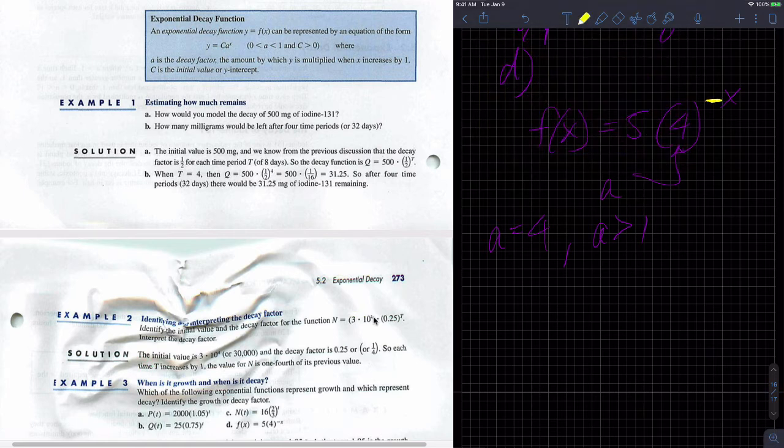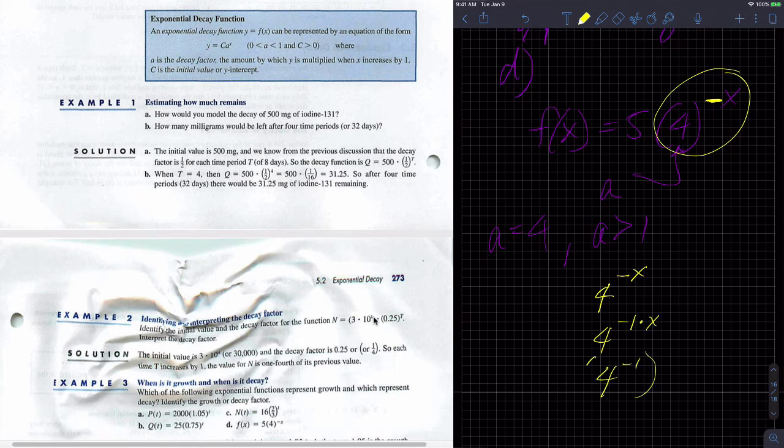If we think about exponential rules, let's rewrite this part of it. Just that part. And let's just take a look at that. 4 to the negative X. But isn't that the same as 4 to the negative 1 times X? And 4 to the negative 1 X. Aren't those two things the same?